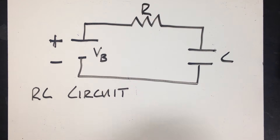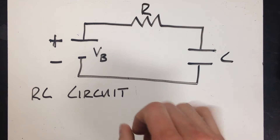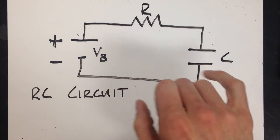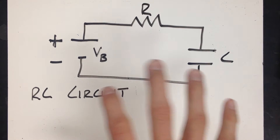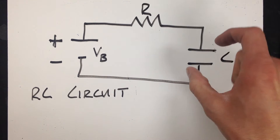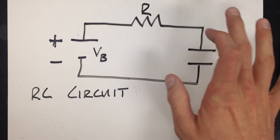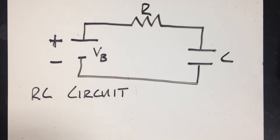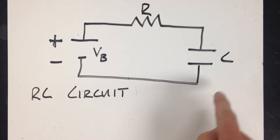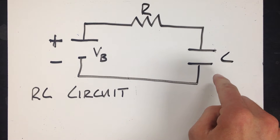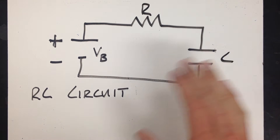Hello learners, and welcome to a video tutorial on the RC circuit — a circuit that contains both a resistor and a capacitor. We're going to talk about how this capacitor is going to charge up and how it can discharge itself. We'll start by looking at the loop rule, and our goal is to figure out how the charge stored on the capacitor changes over time.